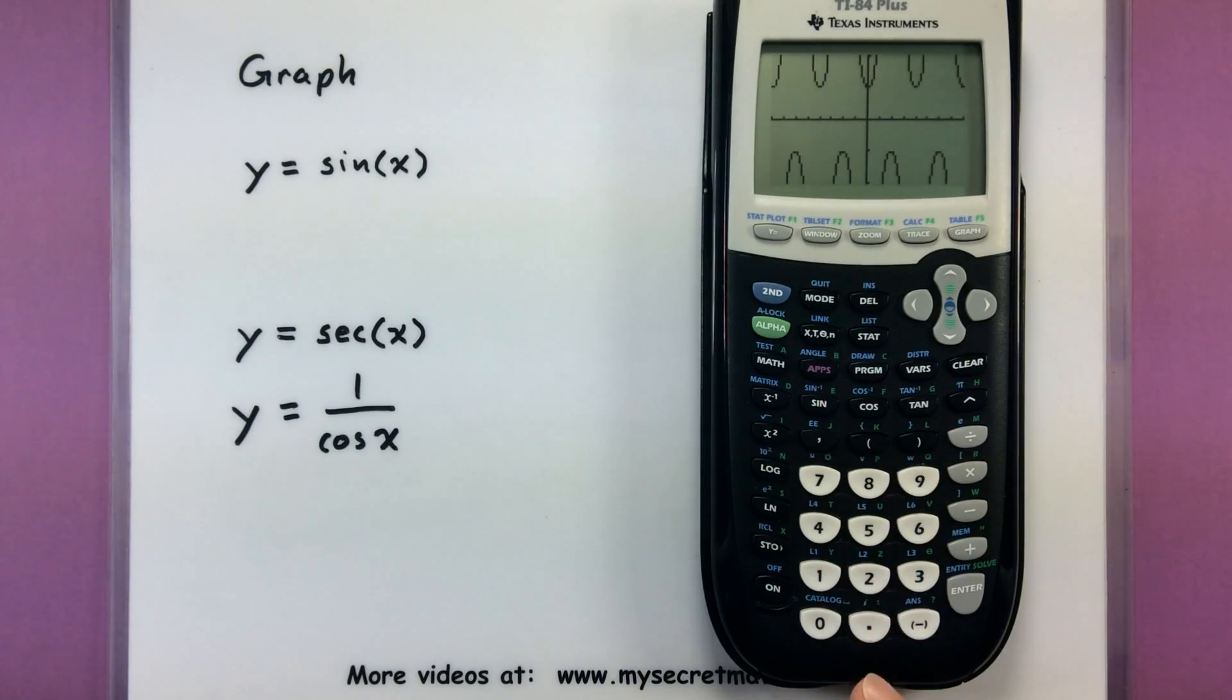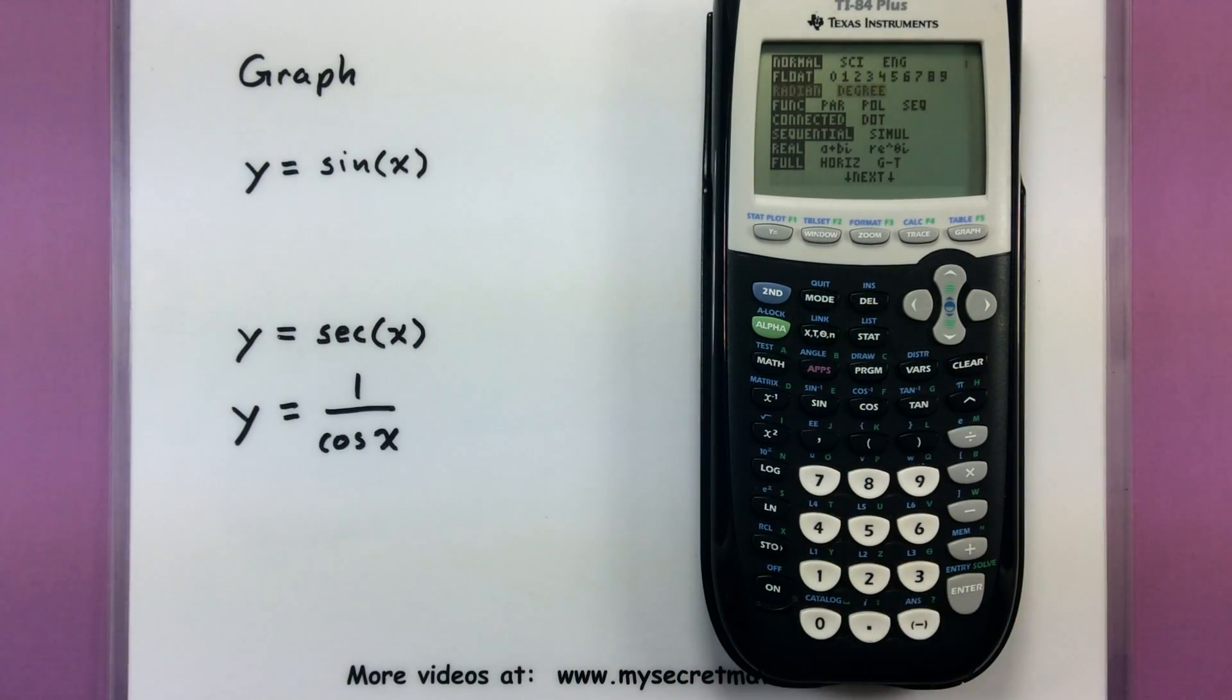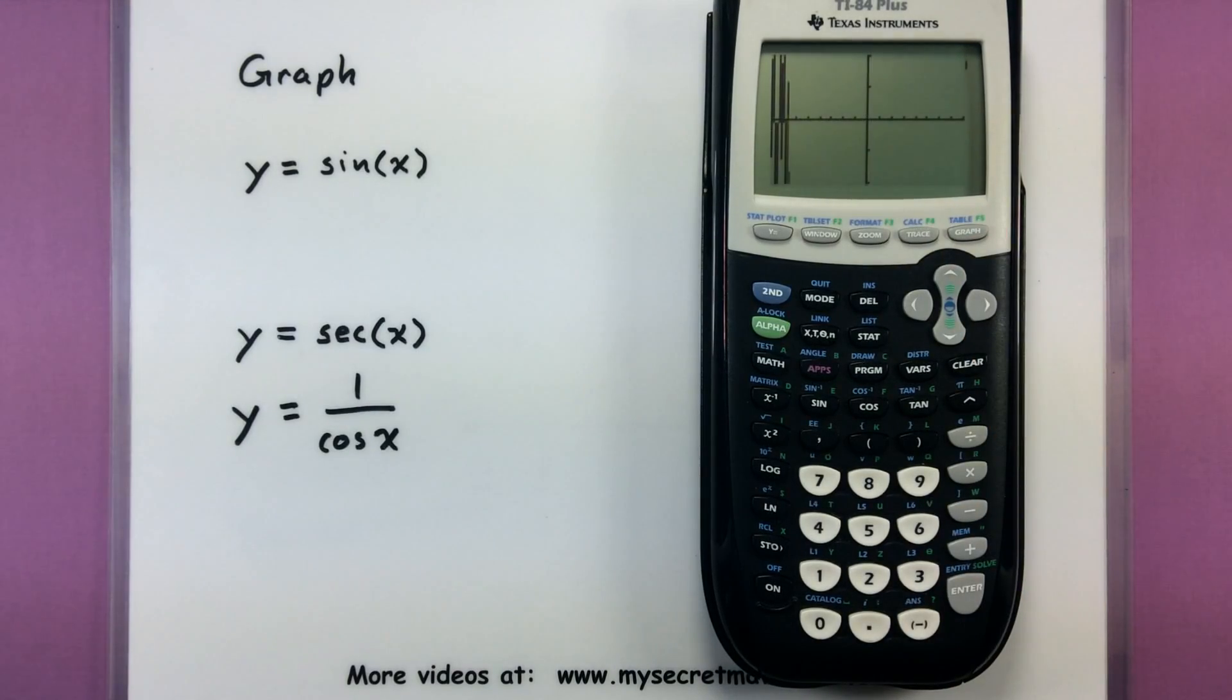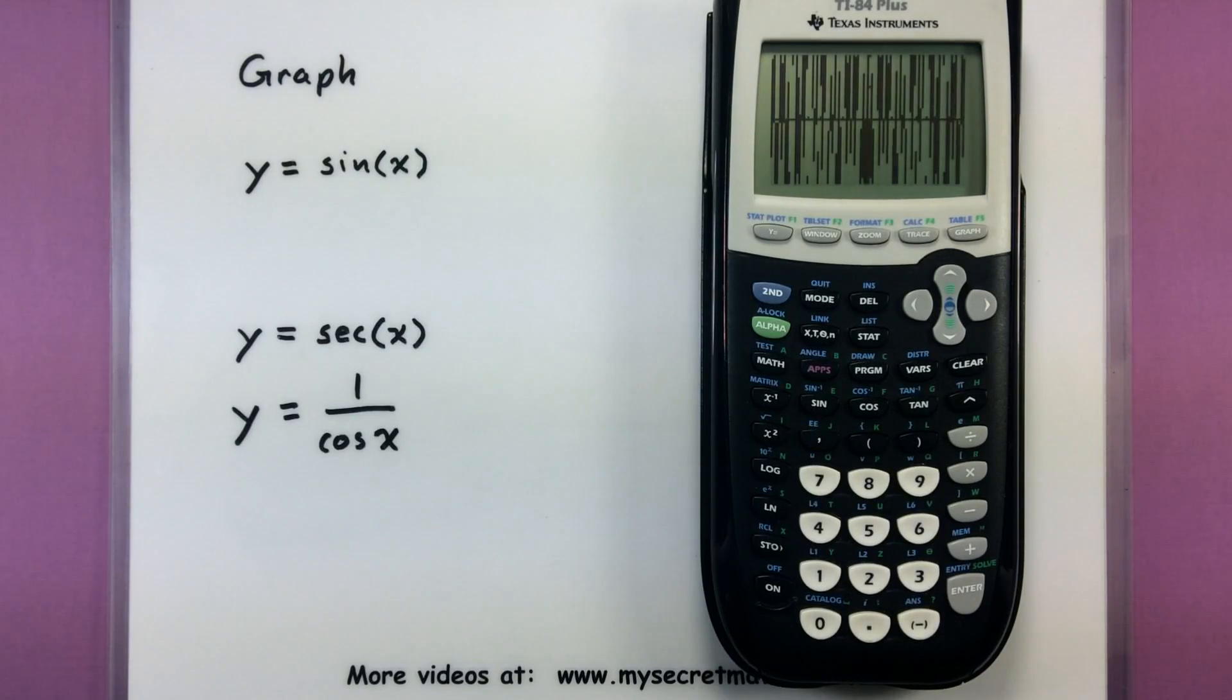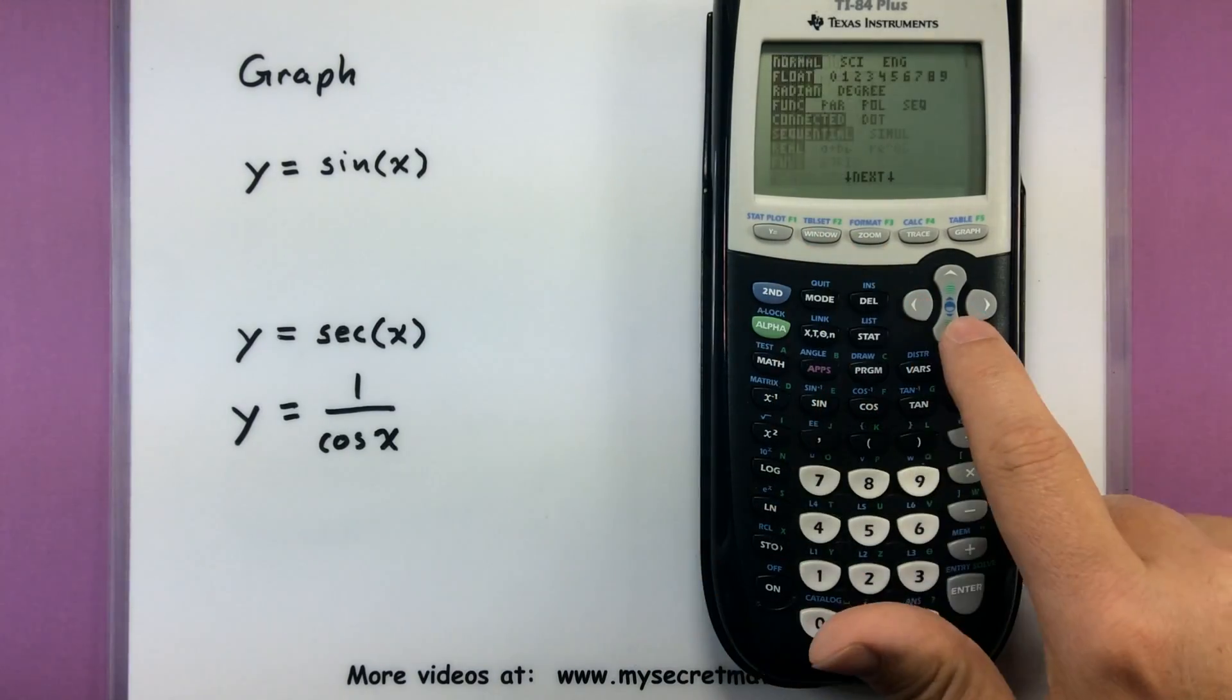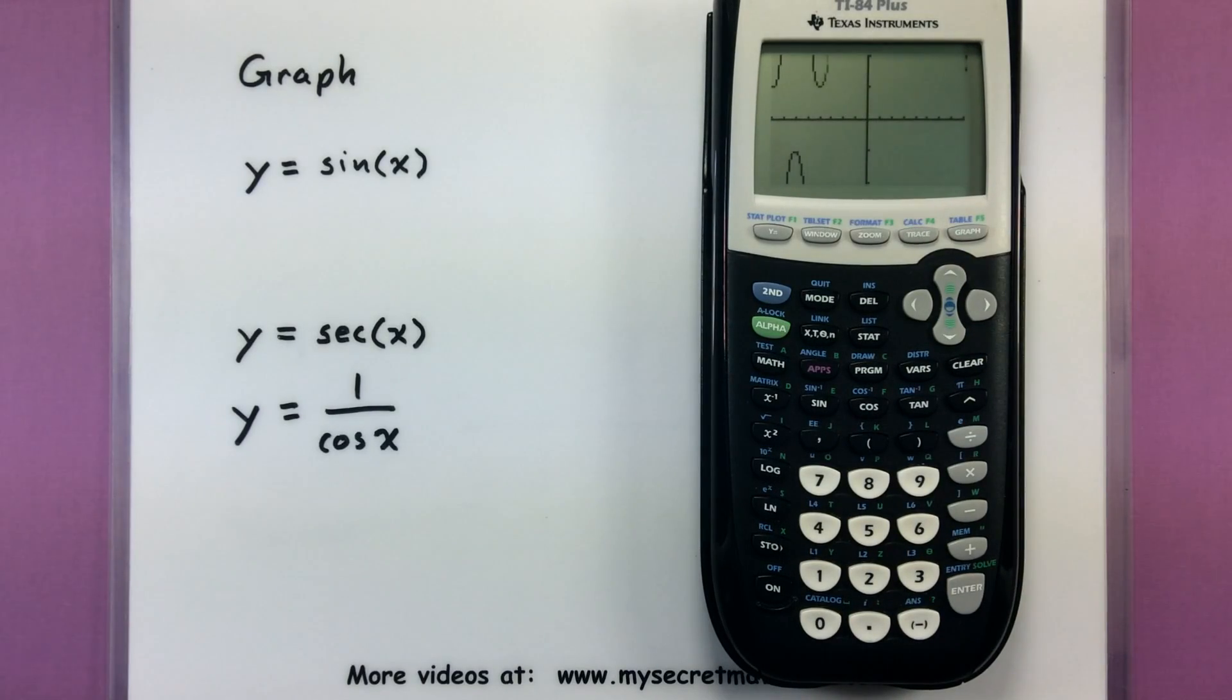You can really tell the difference of making sure that you're in the right mode by looking at what happens if we switch to radian mode and my window is still set up for degree mode. Now I don't really get much of a sense of what this trigonometric function looks like. It's all over the place. It's a mess. So that's really why you want to make sure that your window and your mode are matching up. Let's go ahead and fix that back. Mode, change it to degrees, graph. There's our secant function.